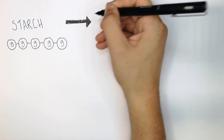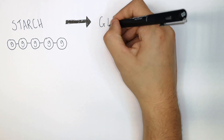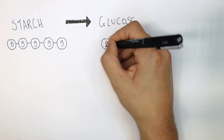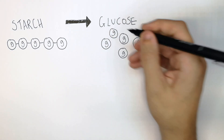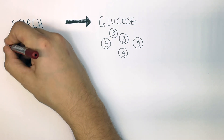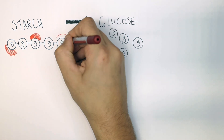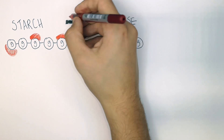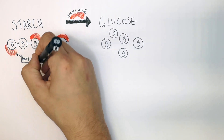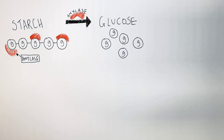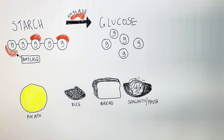Starch is a carbohydrate made of glucose, and it is broken down into glucose in the body. It is the enzyme amylase that binds the starch molecule and breaks it down into glucose. Foods that contain starch include potato, rice, bread, and pasta.